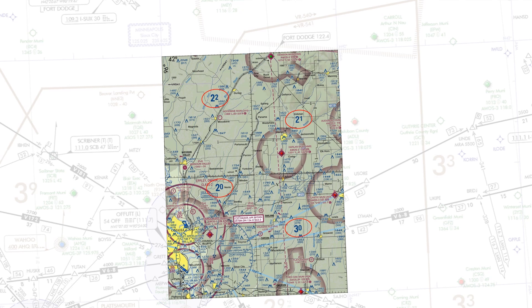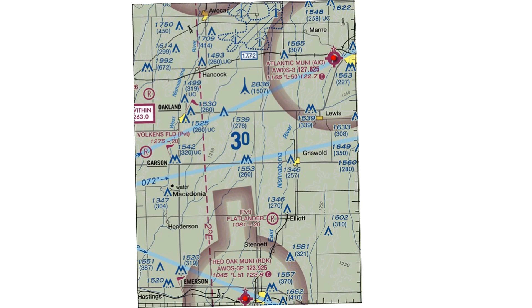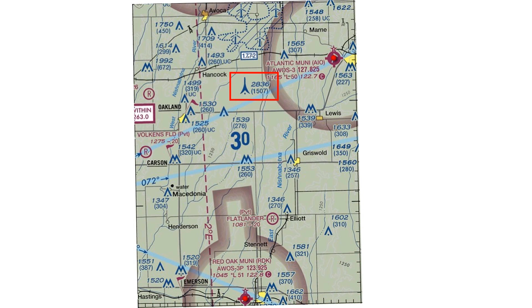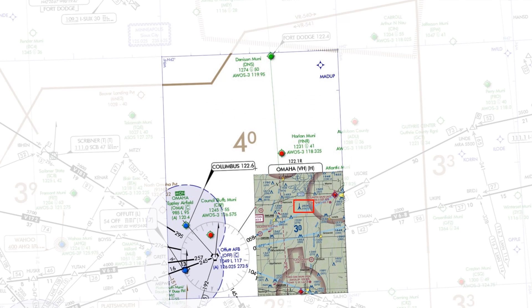That 3,000-foot MEF is significantly lower than the 4,000-foot OROCA. Taking a closer look at that 3,000-foot quadrant, we'll see what's driving the higher figure. Both MEFs and OROCAs are based on the highest point in the quadrant. Here, that point is this obstruction — 2,836 MSL — a radio tower north of this highway, more than 1,000 feet tall. So that radio tower is the highest point in both this VFR sectional quadrant as well as the larger low-enroute chart quadrant.